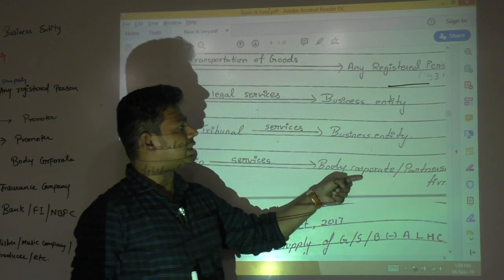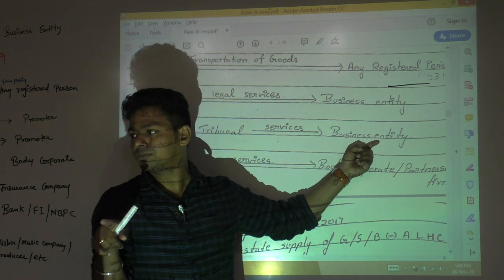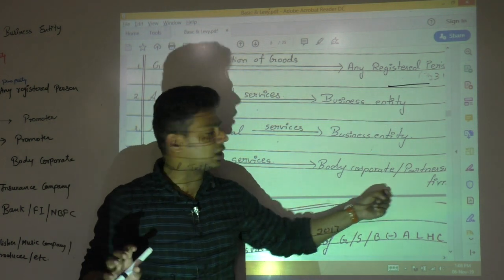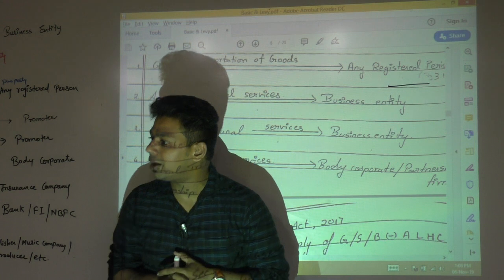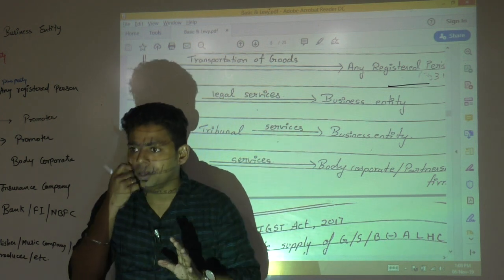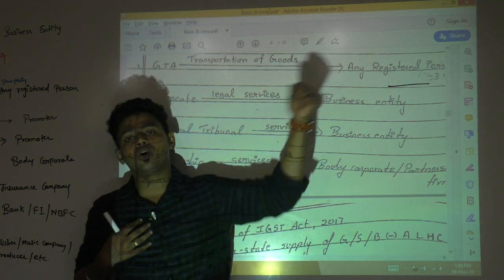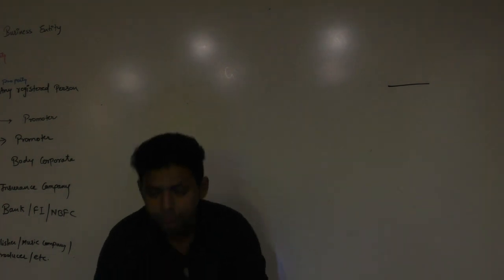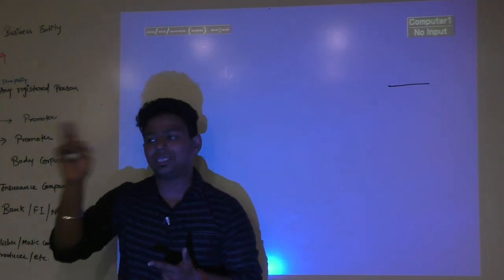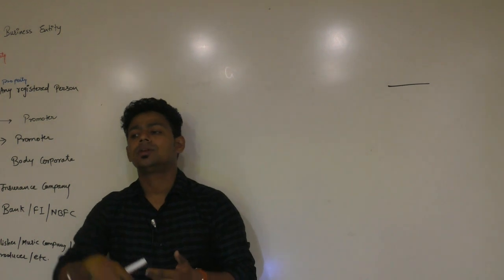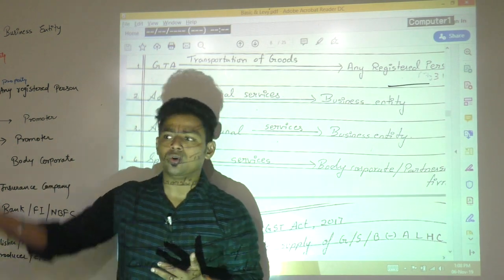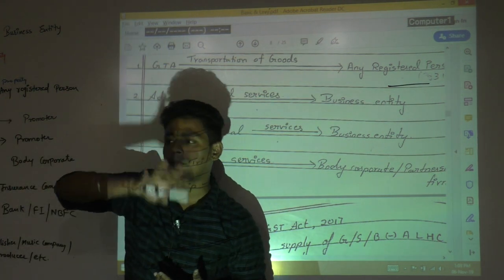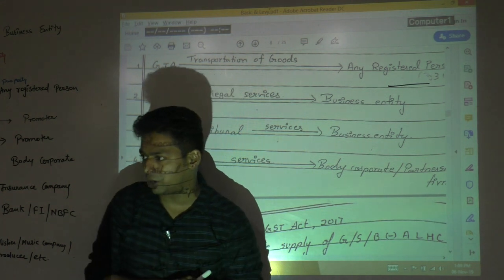Reverse charge mechanism for sponsorship is applicable only when it is provided to body corporate or partnership firm. The difference: for advocates and arbitral tribunals, all business entities are covered including proprietorship. Here, only body corporates like companies and partnership firms are covered. To summarise up to four: GTA — registered person pays tax; advocate — business entity pays; arbitral tribunal — business entity pays; sponsorship — body corporate or partnership firm pays.